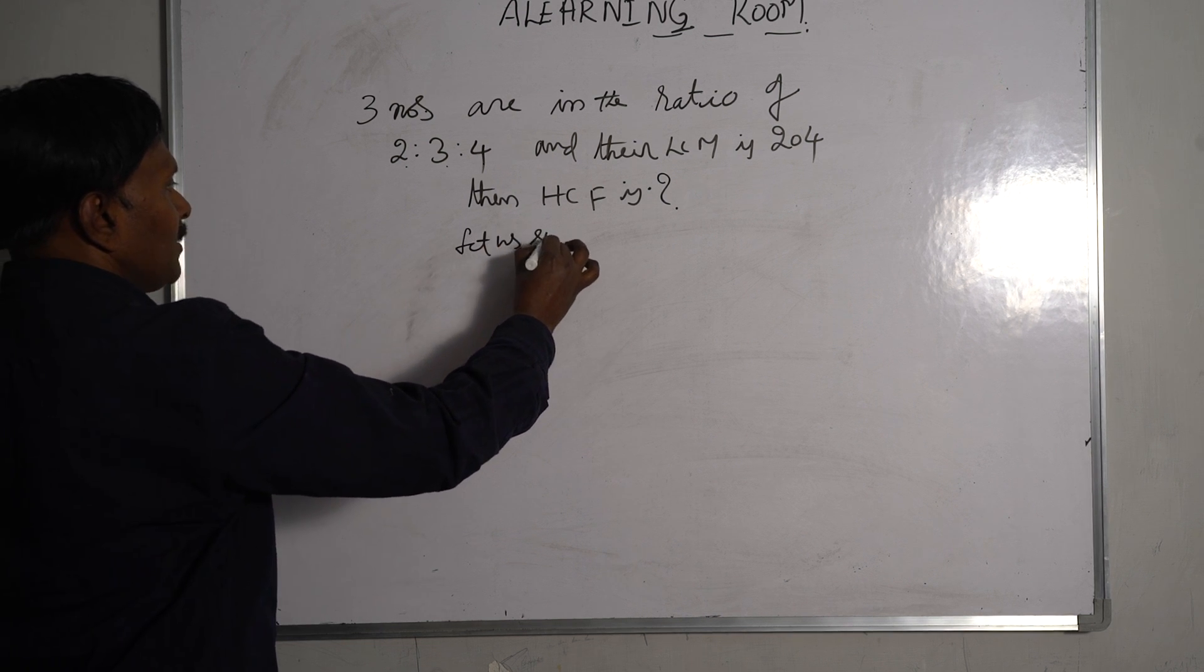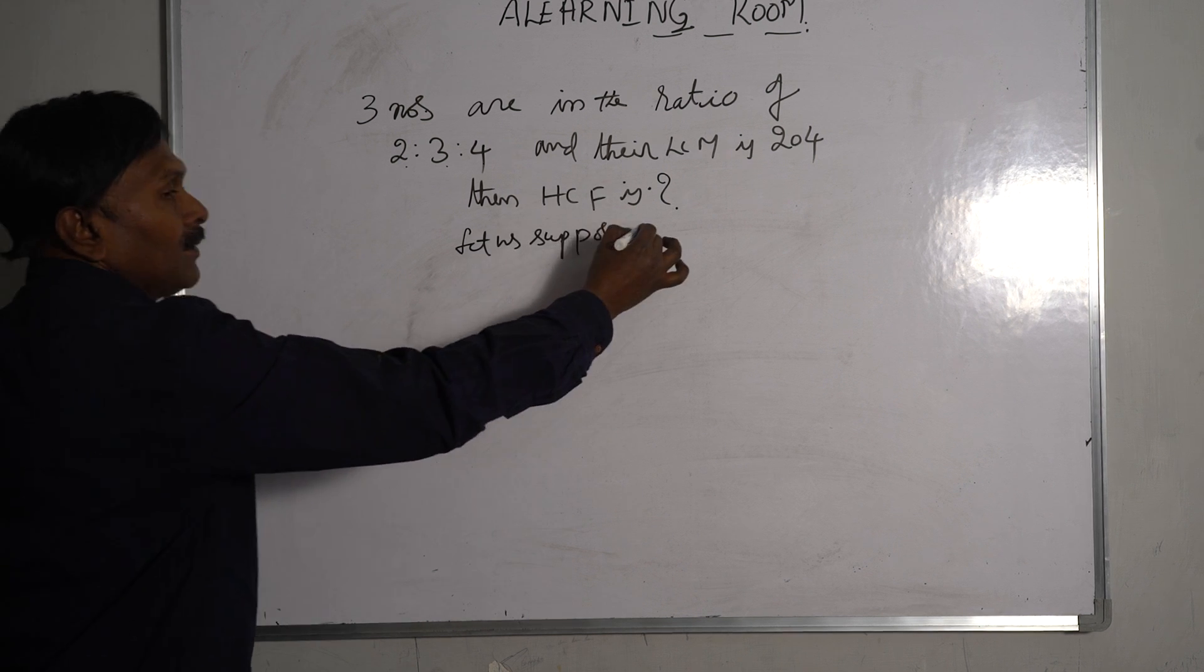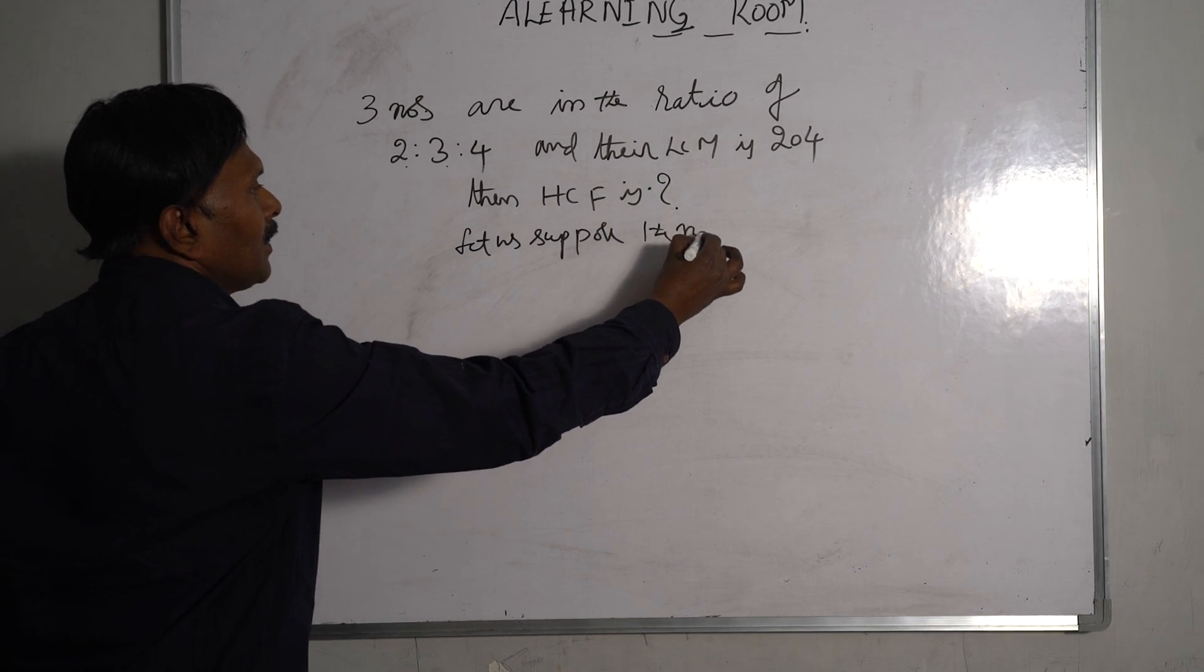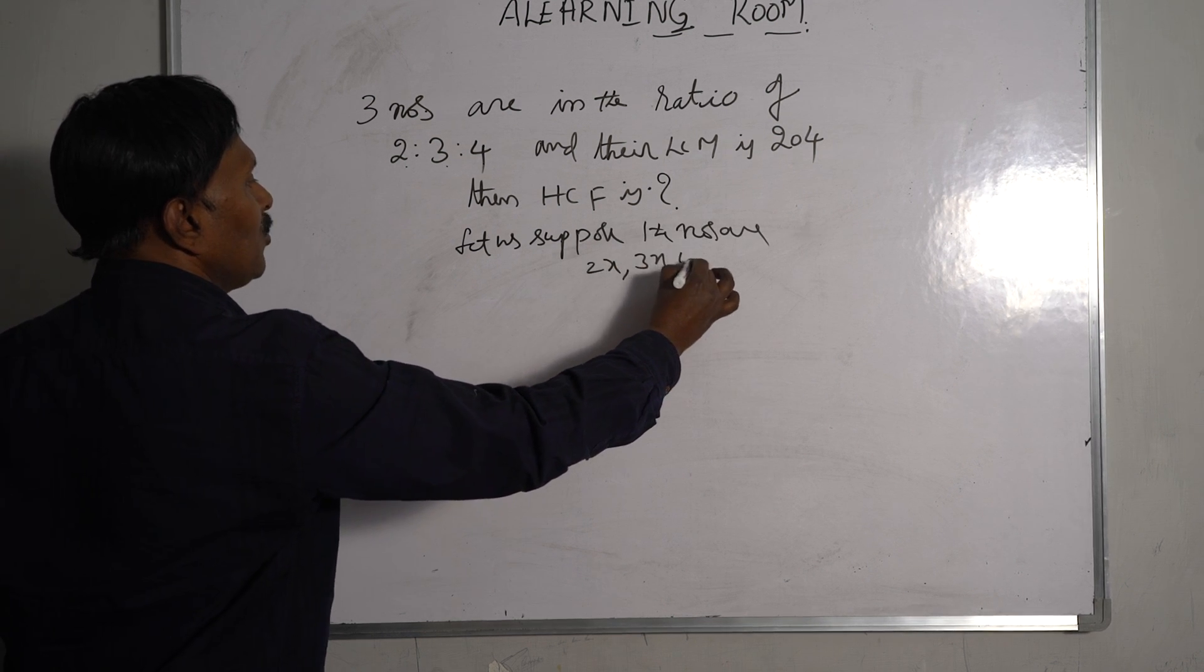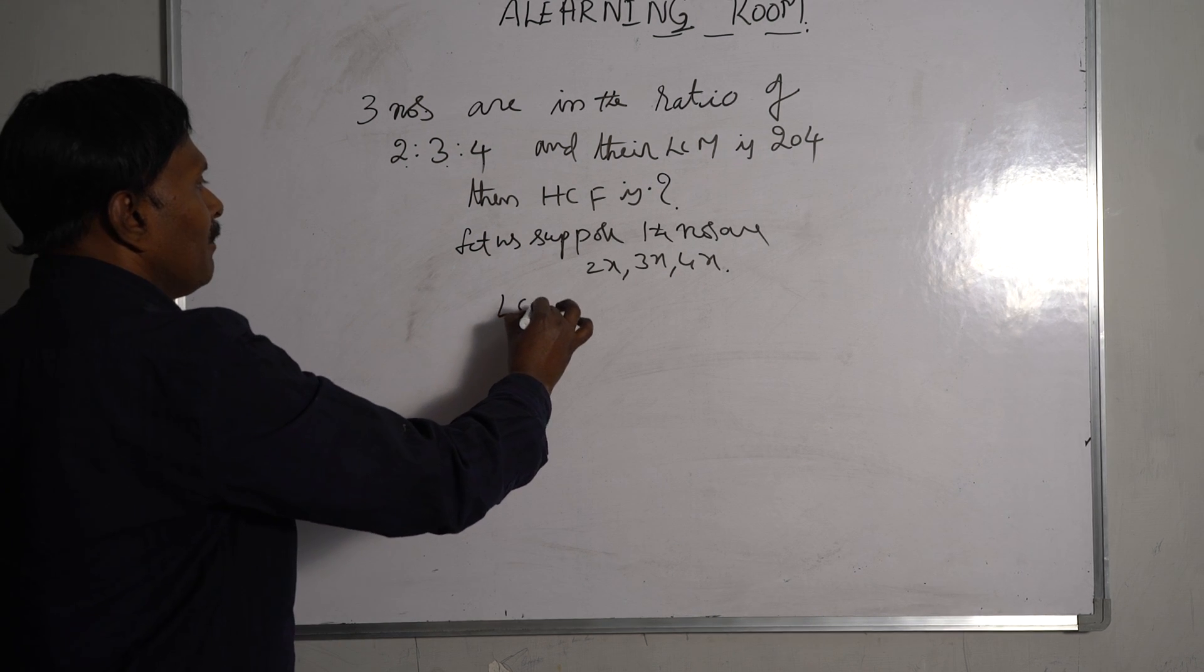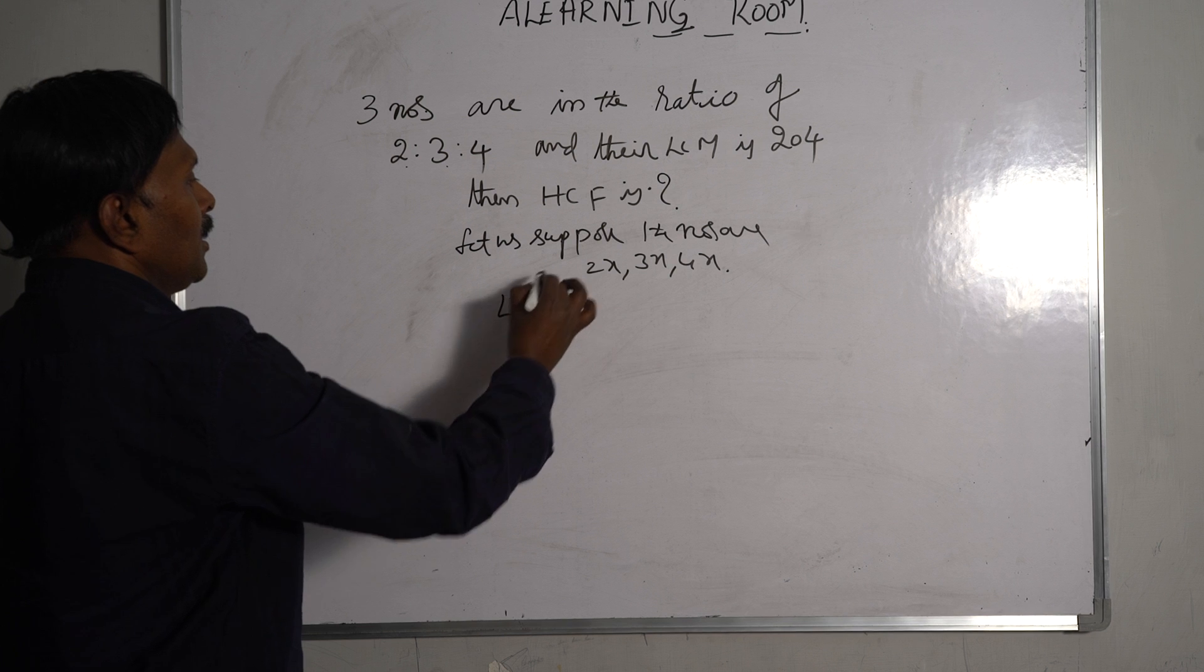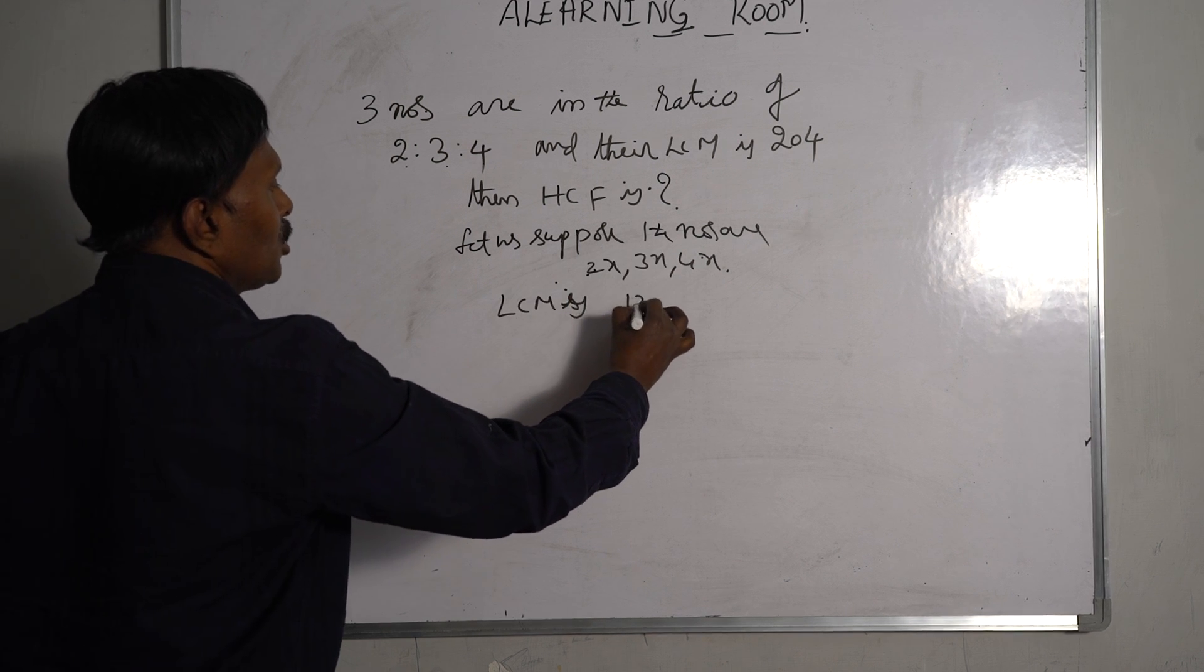Let us suppose the numbers are 2x, 3x, 4x. According to this problem, the LCM is... see, 2 is a multiple of 4, this can be eliminated. LCM is 12x.